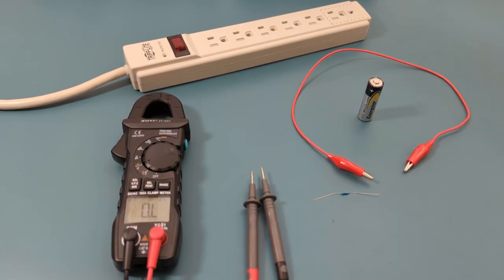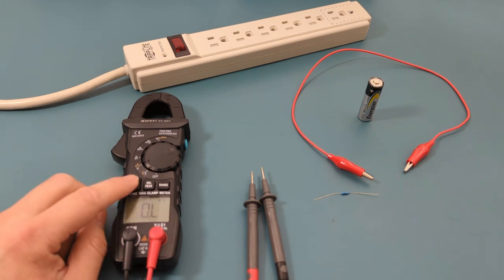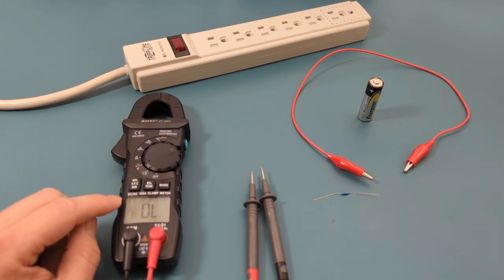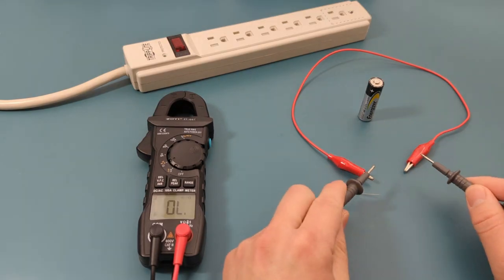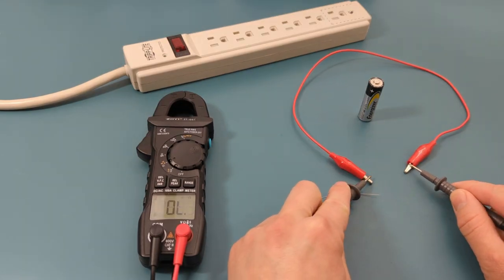The next test is to check the continuity of this alligator clip. Press the select button to toggle from resistance to continuity mode. We hear a beep, so there is continuity.